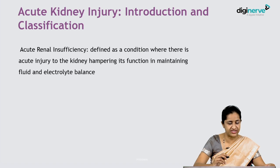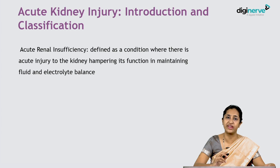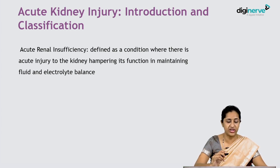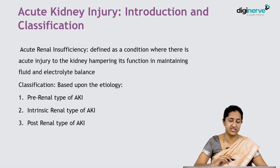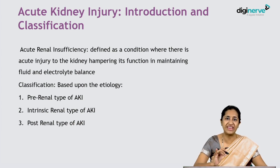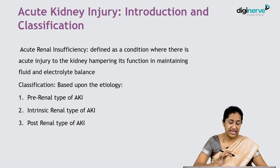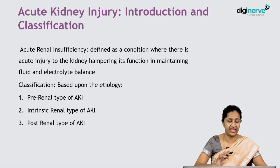Coming to the introduction and classification, acute kidney injury is a state of acute renal insufficiency. It is defined as a condition where there is an acute injury to the kidney hampering its function in maintaining the fluid and electrolyte balance in the body. The classification is based upon the etiology and has three main broad categories: pre-renal type of AKI, intrinsic renal type of AKI, and post-renal type of AKI.